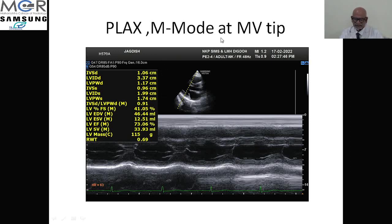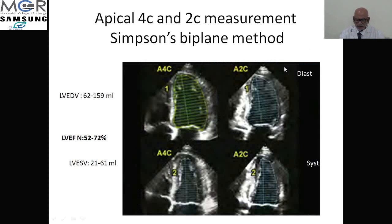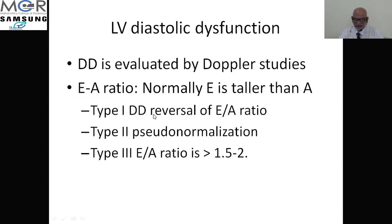This is the biplane method where you are using two planes — the 4-chamber and 2-chamber views — measuring in both systole and diastole. I have just demonstrated this method. Now moving on to LV diastolic dysfunction — ejection fraction is a systolic function of the left ventricle.